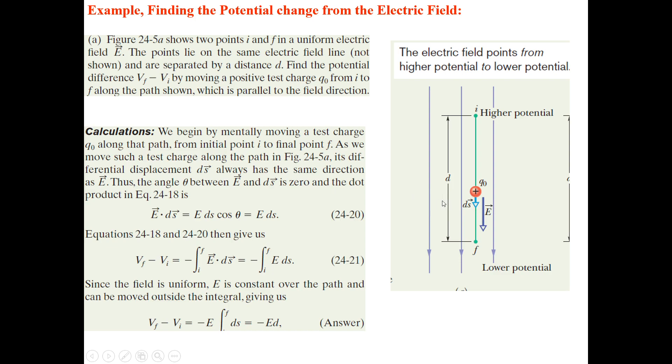Particle and electric field are parallel, means that the angle is zero. ΔV = Vf - Vi equals minus E dot ds. E is uniform and E is constant, remains constant in the whole path, then you can integrate ds from I to F.